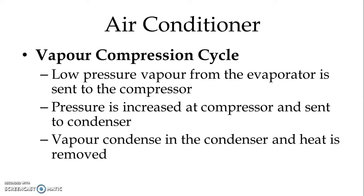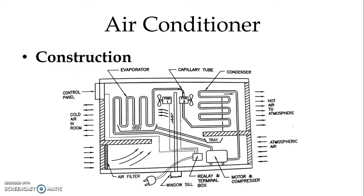Let us see the diagram again and then it will be more clear. We can see that we have the evaporator, which sends low pressure vapor to the compressor. At the compressor, the low pressure vapor is compressed and the high pressure vapor is sent to the condenser.